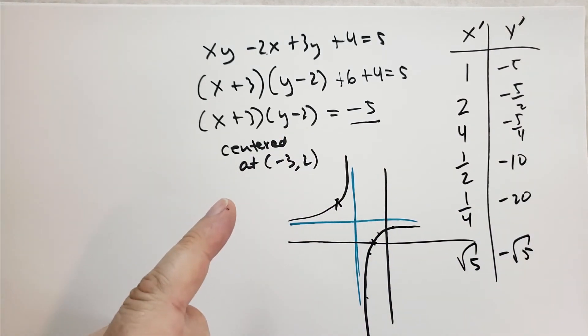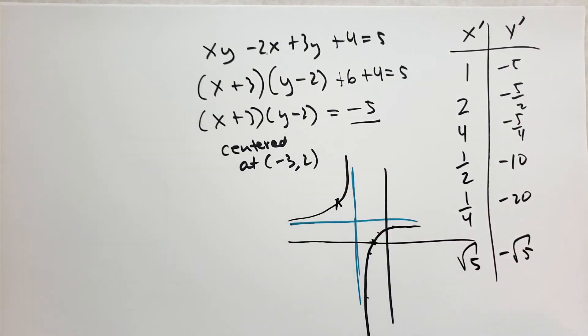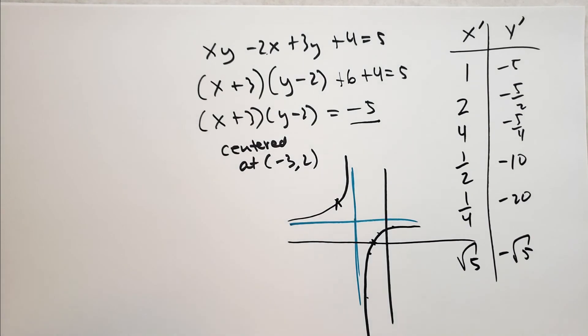Root of 5 times negative root of 5 would give you negative 5. I was worried about taking the square root of a negative number.